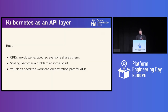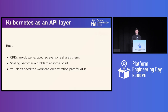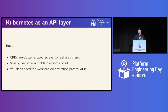And one other thing: if you're focusing on providing higher-level APIs that you want to make available to users, you might not even need the workload orchestration part of Kubernetes. You might not even want to run containers natively on your platform, because you want to provide higher-level abstractions. But it's something that you always have in Kubernetes, even if you might not need it.